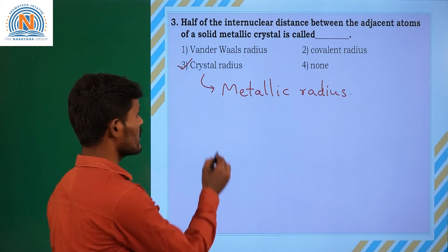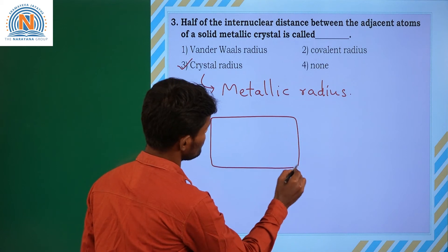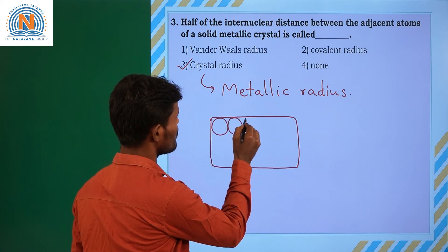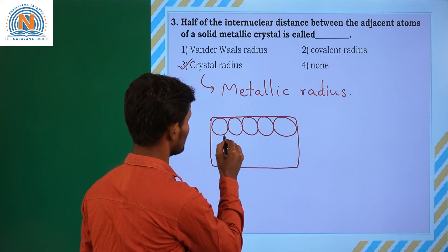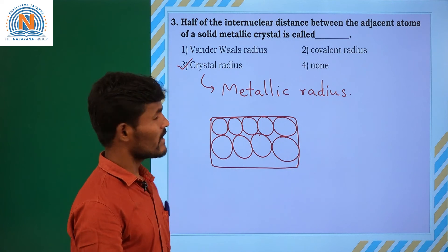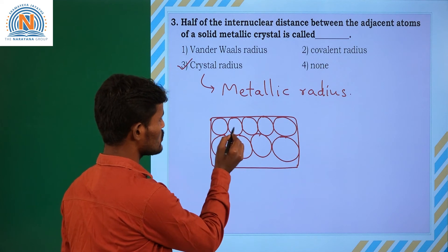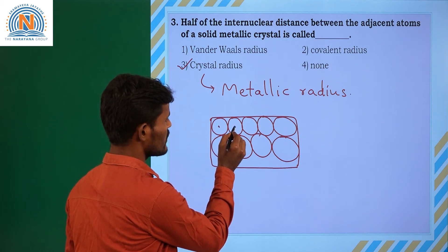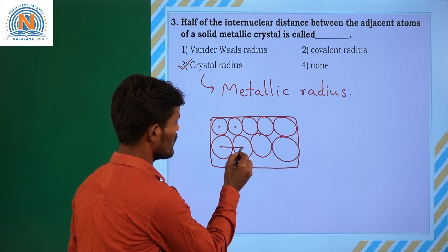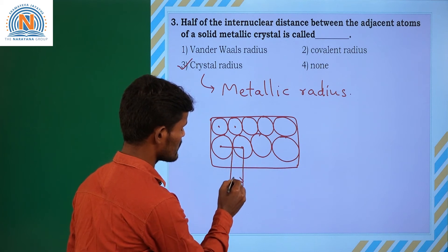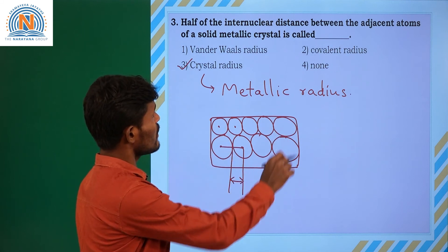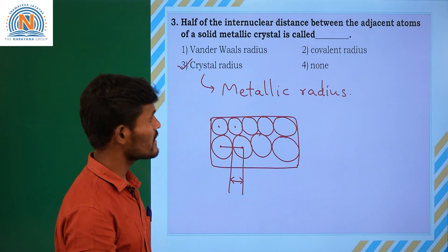See here — half of the internuclear distance. Consider a solid metallic crystalline structure where atoms are present side by side. It is the solid metallic crystal. Consider any two atoms — here is the nucleus of this atom and here is the nucleus of this atom. This is the half of the internuclear distance between adjacent atoms of a solid metallic crystal, which is called crystal radius or metallic radius.